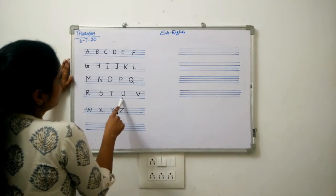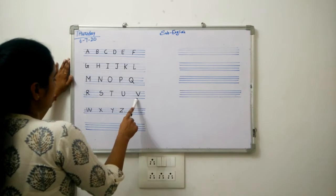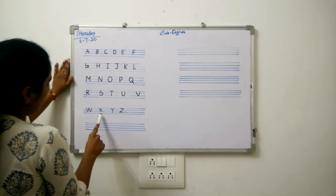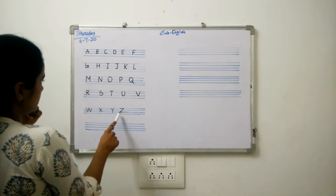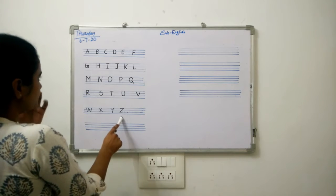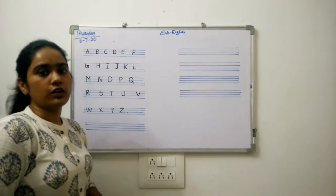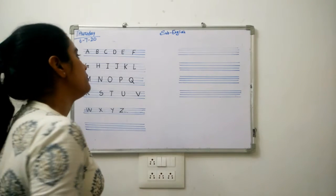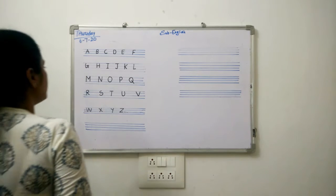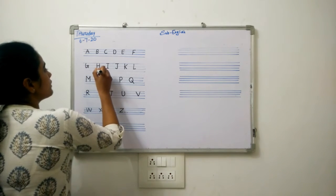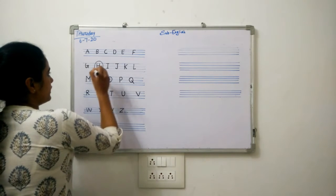T for telephone, U for umbrella, V for van, W for watch, X for xylophone, Y for yard, Z for zebra.